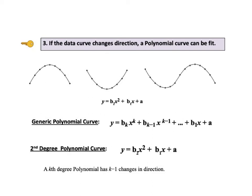KTU number 3 says if the data curve changes direction, a polynomial curve can be fit. A generic polynomial curve has an equation of the form shown here. Note that there is just one X variable, but it is raised to various powers, starting with the power of 2, X squared. If there were only a power of 1, the equation would be that of a straight line. Now the B's are coefficients and the A is the intercept.